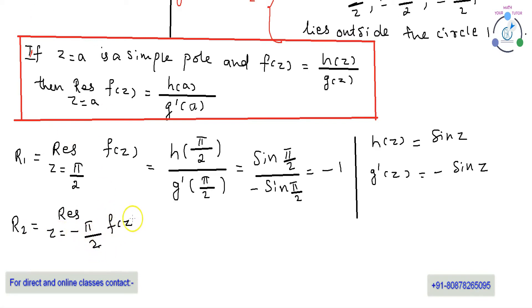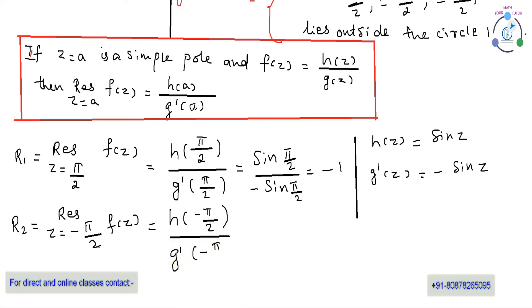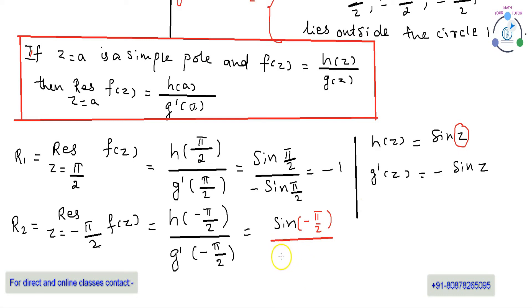To find the residue at z = -π/2, substitute a = -π/2 in the formula. Then Residue at z = -π/2 of f(z) = h(-π/2) / g'(-π/2). Here h(z) = sin(z), so sin(-π/2) gives the numerator. And g'(z) = -sin(z), so -sin(-π/2) gives the denominator. Using sin(-θ) = -sin(θ), we get -1/1... therefore we get -1.